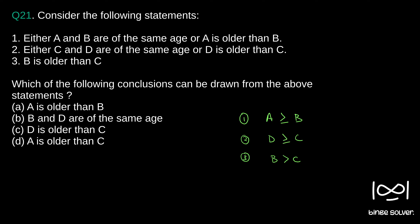Let us analyze the statements. The question is which of the following conclusions can be drawn from the above statements. First option is A is older than B. Since A is greater than or equal to B, we cannot say A is strictly greater than B, because A can be equal to B also. So option A is wrong.